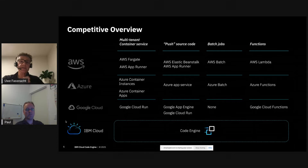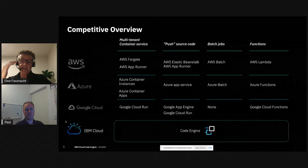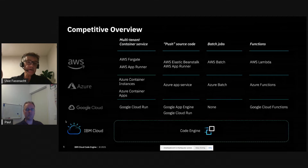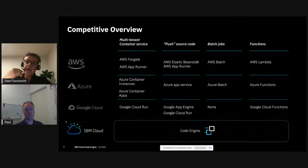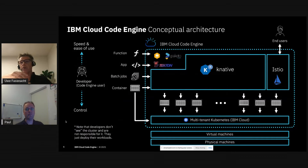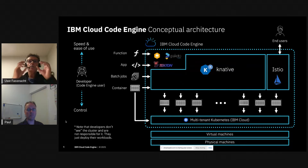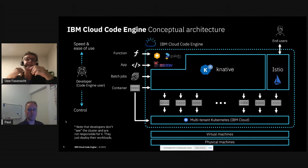Before we go to the demo, let me show you a quick architecture diagram. Unlike some competitors, Code Engine is built completely on open source. Physical and virtual machines sit in IBM multi-zone regions around the world — Dallas, Frankfurt, London, Tokyo, Sydney. On each, we've built a gigantic Kubernetes cluster ready to run containers, and on top of that we've put Knative, an open source technology that deploys and scales containers, even down to zero.